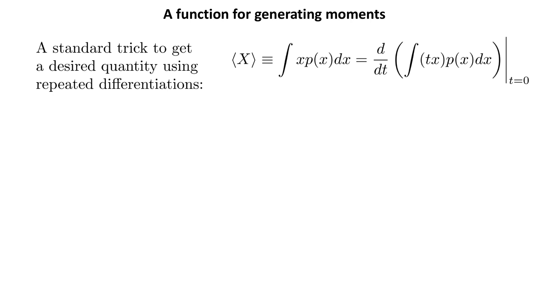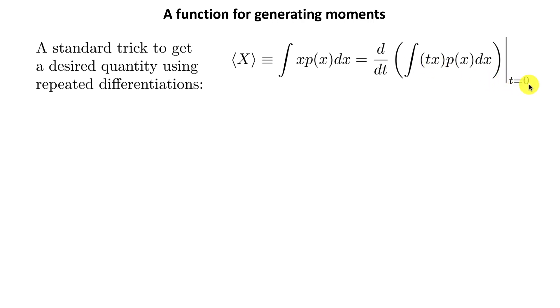I'm going to begin by defining a function that we will use for generating the moments of a probability distribution. This involves a very useful trick. Suppose there is a random variable x; we want its expectation value. That expectation value is got by weighting the possible values of x with the probability of x and then integrating over all values of x from minus infinity to plus infinity. Now, if we differentiate tx with respect to t, the answer is simply x, and of course I can put t equal to 0 at the end.